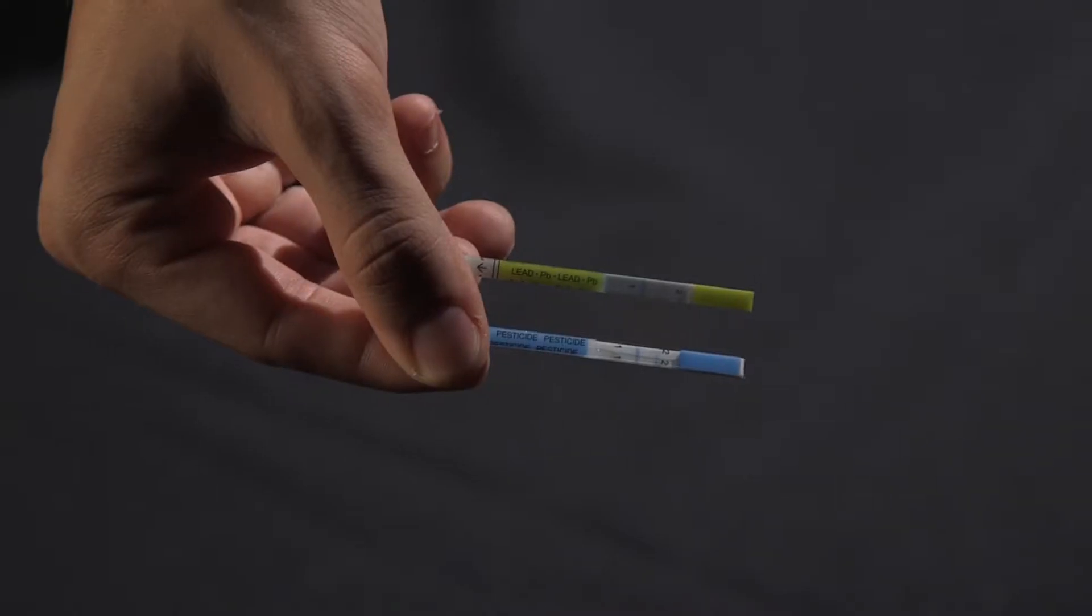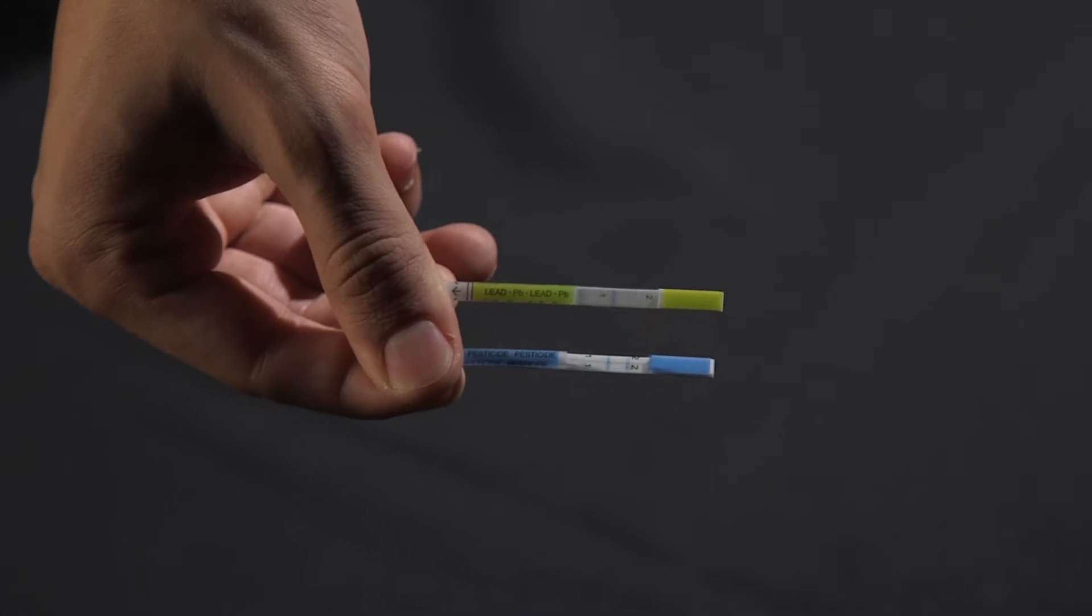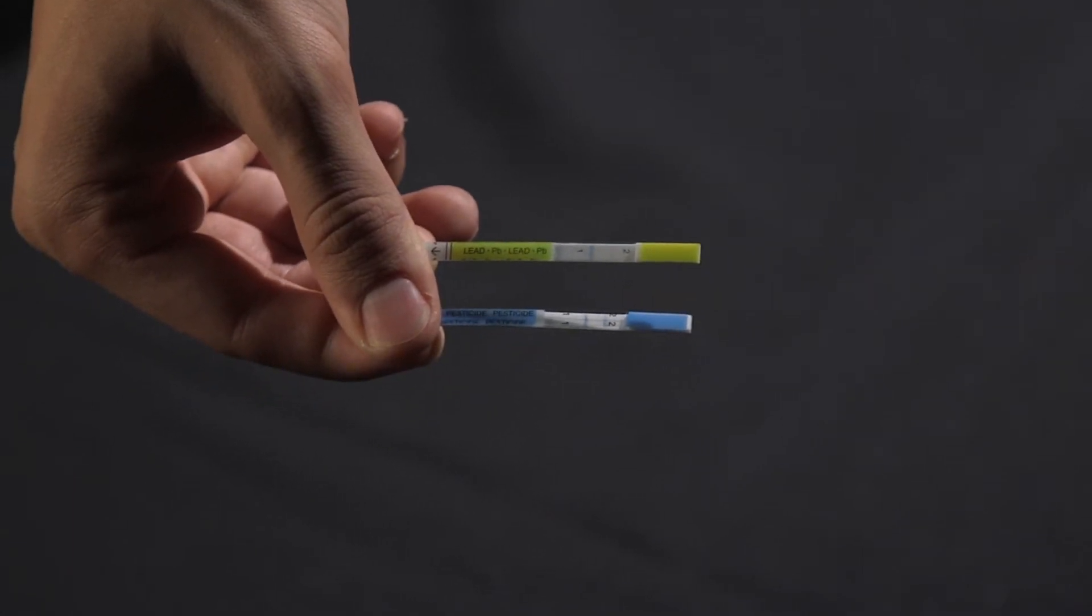After 10 minutes, you'll see the blue lines appear on the test strips. Grab the sheet of paper containing the test result charts and compare your test strips to the illustration.